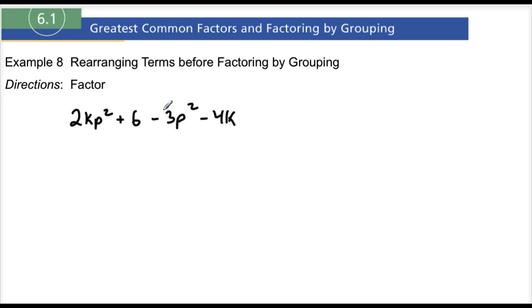Let's go ahead and factor this polynomial right here by the grouping method, but notice that in order for this one to work we're going to have to factor first by rearranging the terms. The reason why you know to do that is if you were to put parentheses around the first two terms here...